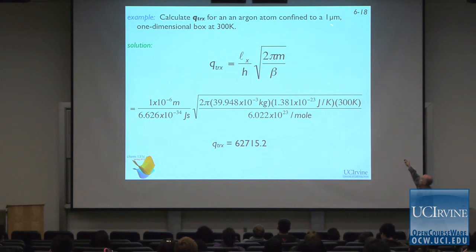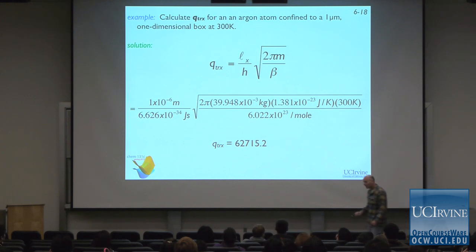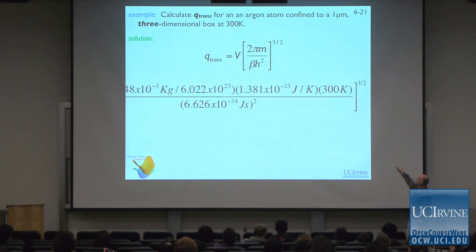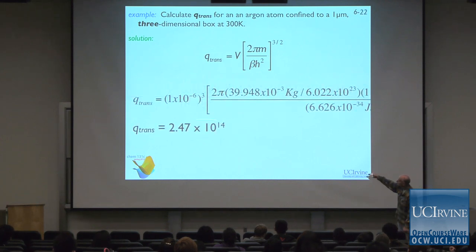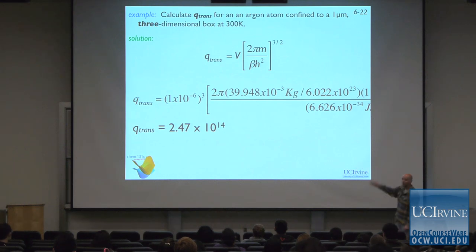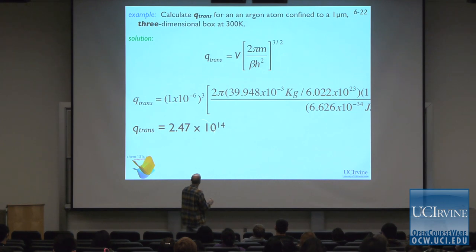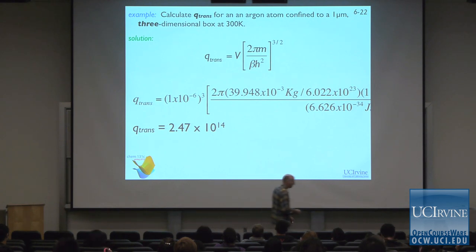For an argon atom in a one-micron one-dimensional box, we calculated 62,700 thermally accessible translational states. In three dimensions, the translational partition function gives 10^14 states at 300 K. We're never going to see evidence of this energy quantization in a laboratory experiment — we'll never have the resolution to distinguish between states this close together, and it would be practically impossible to even look for that as an experimental outcome.